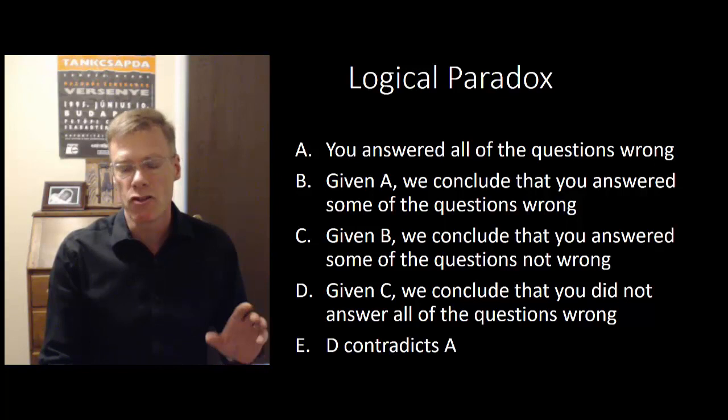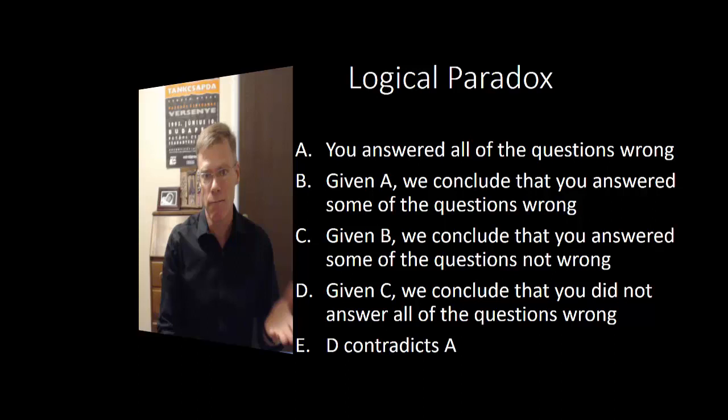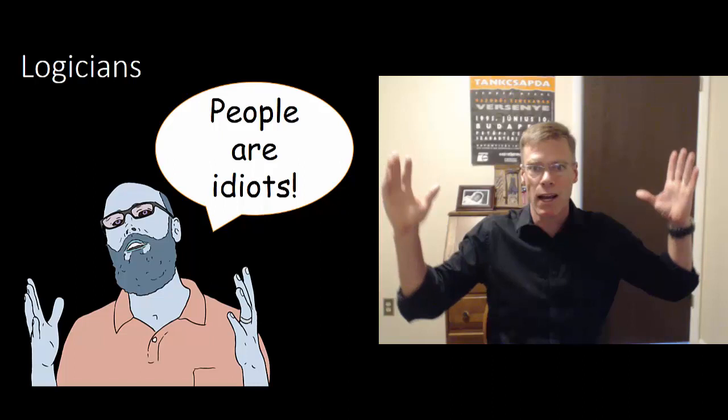The problem is that, of course, D contradicts A. So there's our paradox, and in dealing with the paradox, logicians traditionally have just kind of thrown their hands up in the air and said, people are idiots.